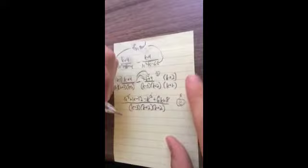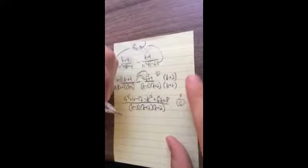And our final answer is 7k minus 4, because the k squared and negative k squared cancel out, and it's k minus 3, k plus 2, k plus 2.